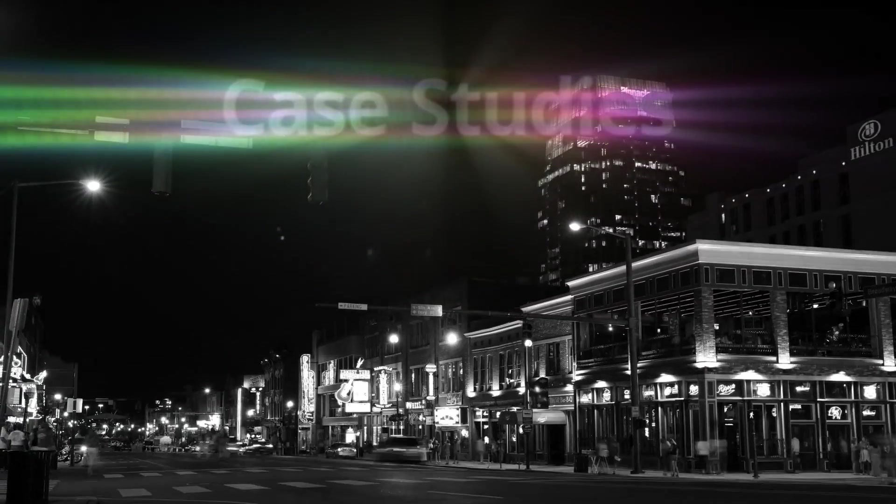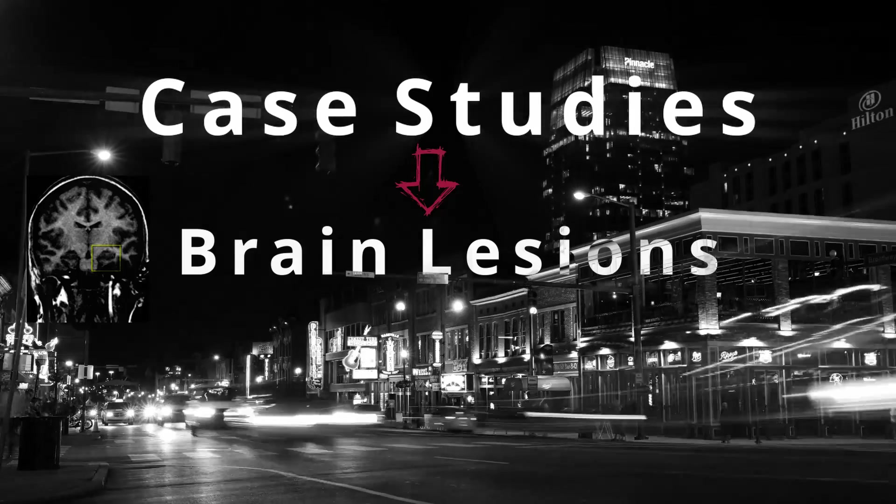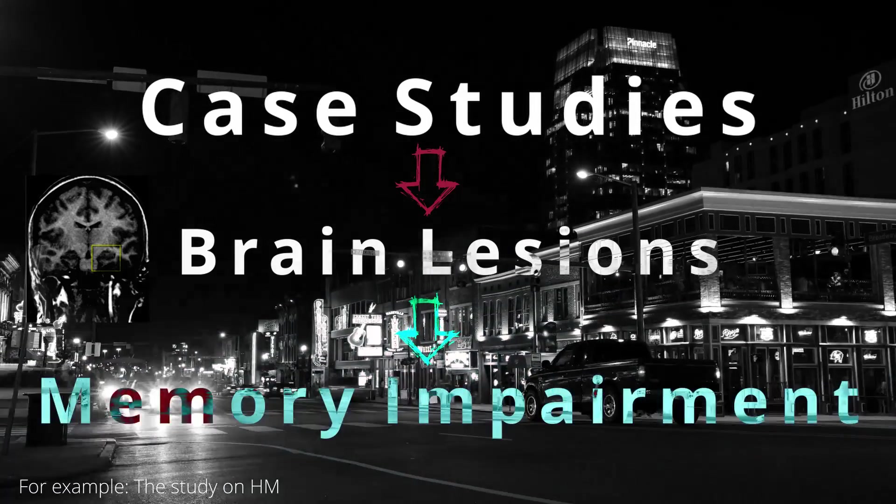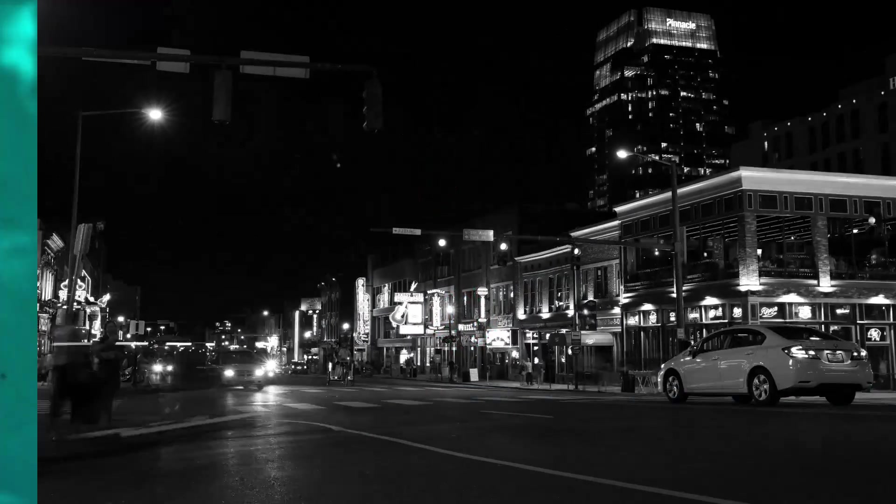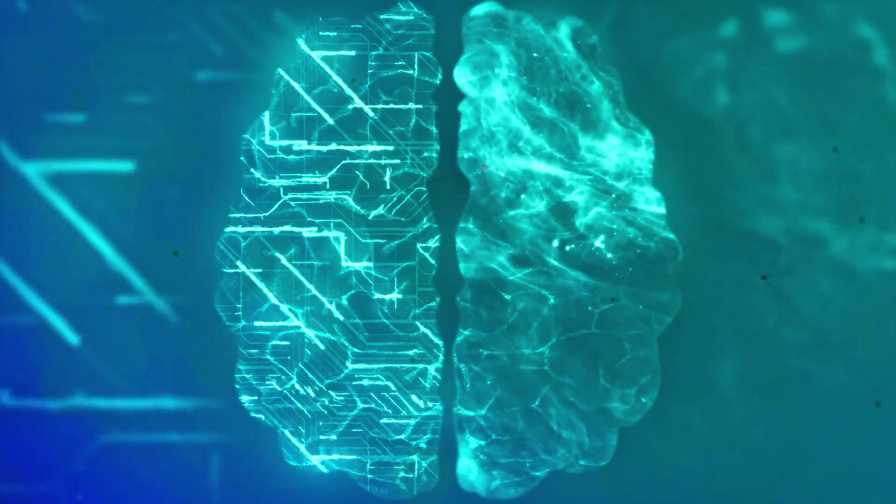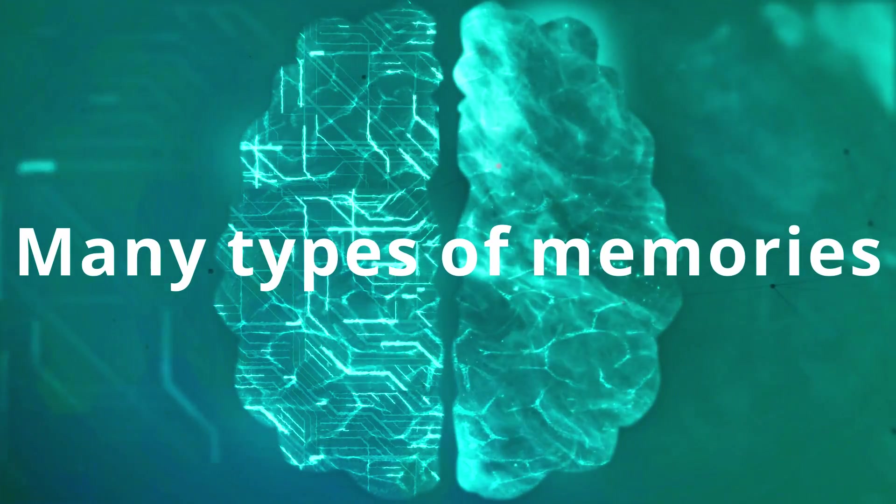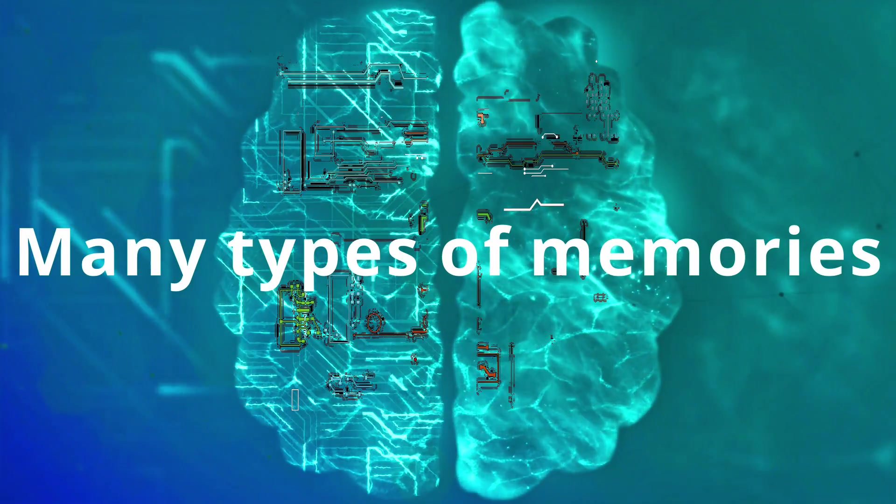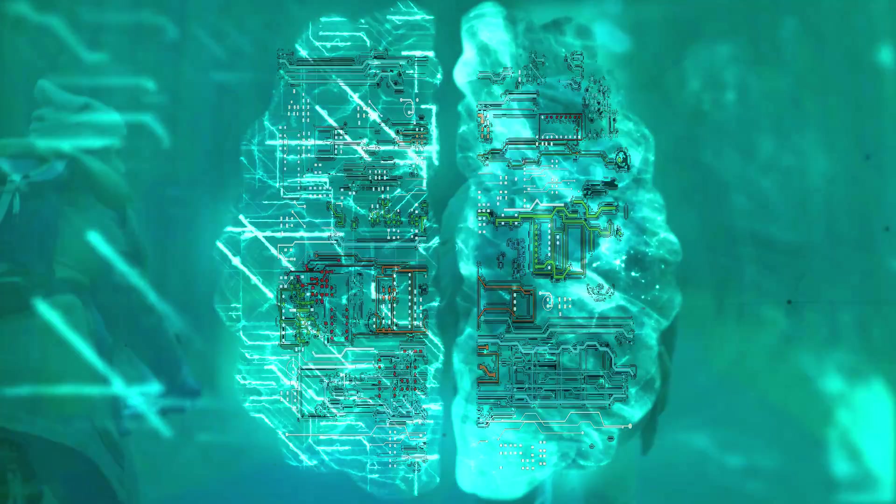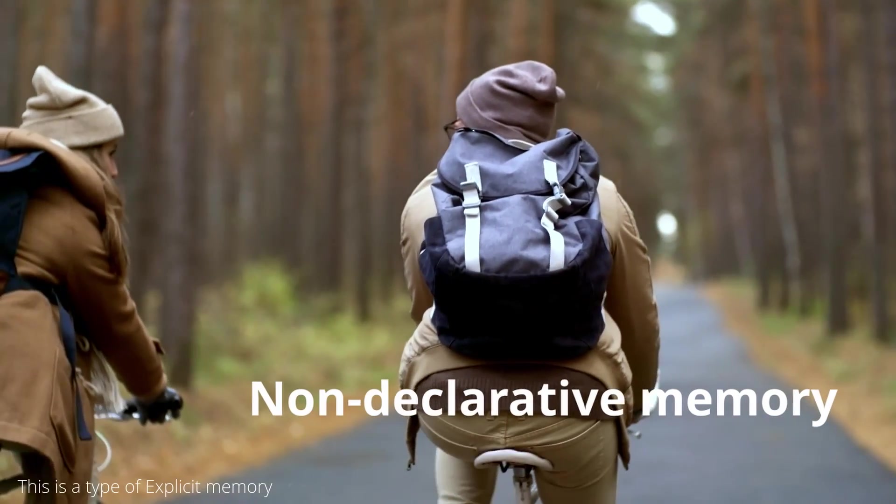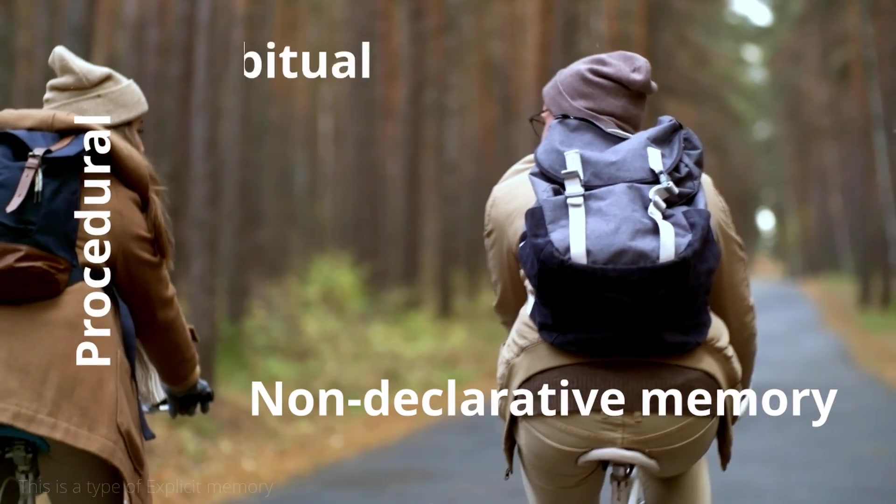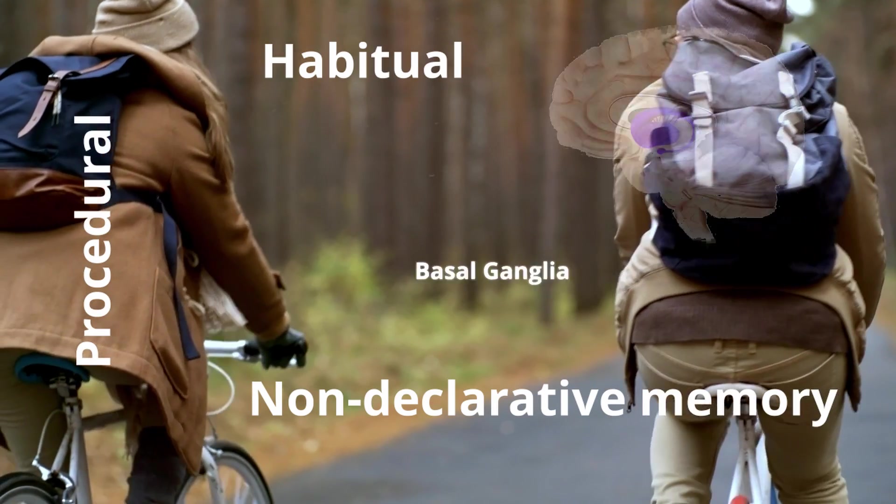Case studies support its role in memory formation, where lesions in the hippocampus have resulted in the inability of patients to form new memories. However, it's important to note that there are many types of memories, each supported by distinct neural systems throughout the brain. For example, non-declarative memory, which includes procedural and habitual learning, is known to be supported by the basal ganglia.